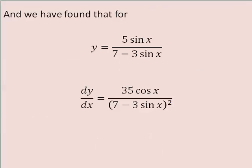And we have successfully found that for this function y, the derivative is 35 cosine x all over the quantity 7 minus 3 sine x quantity squared.